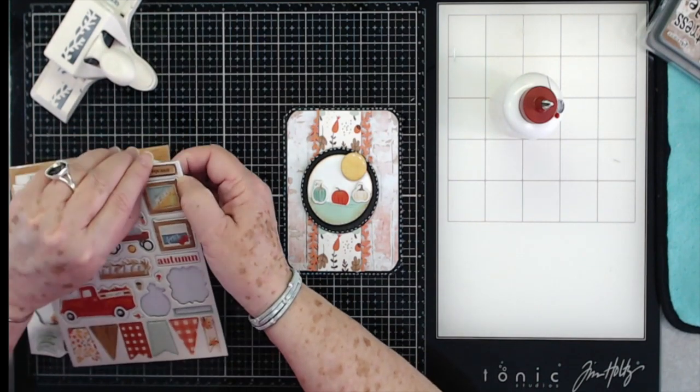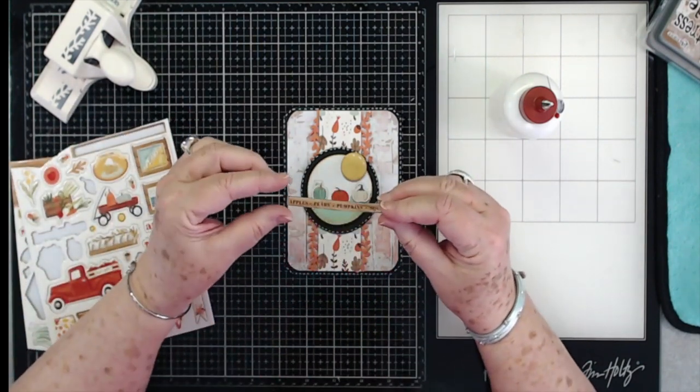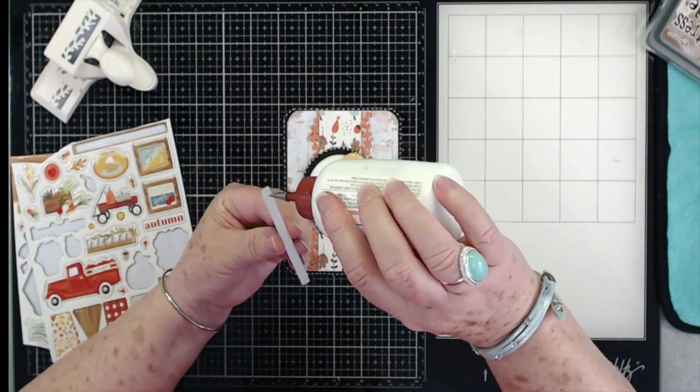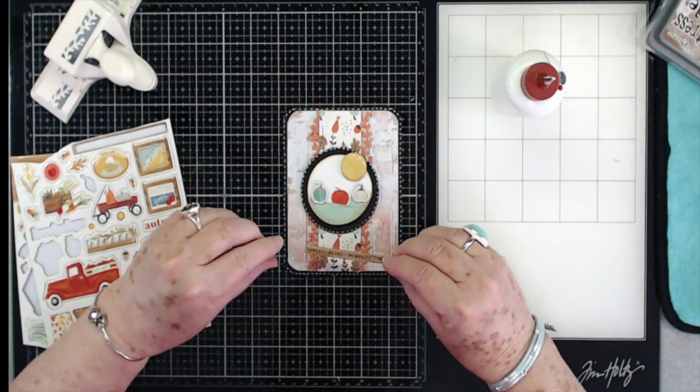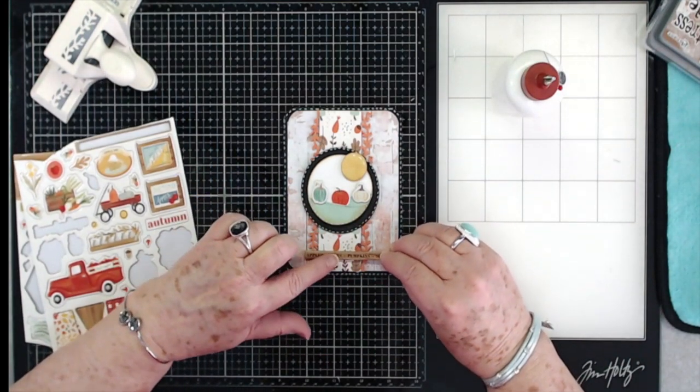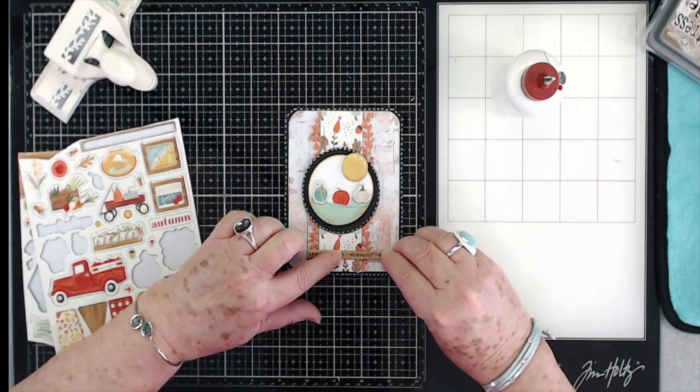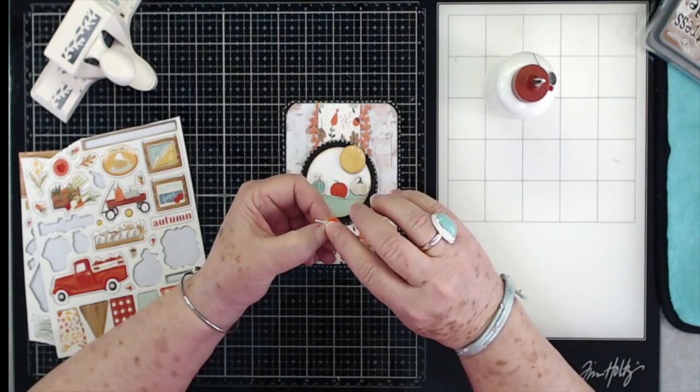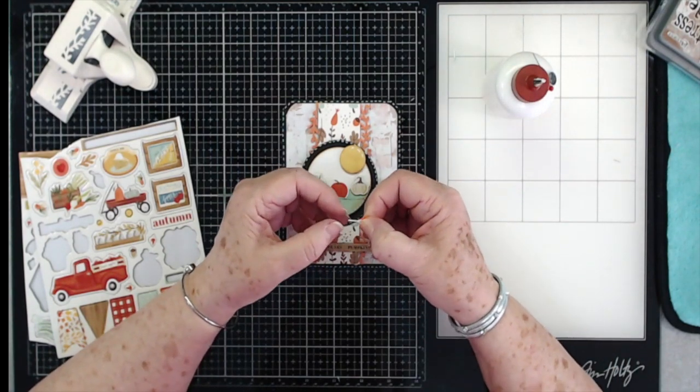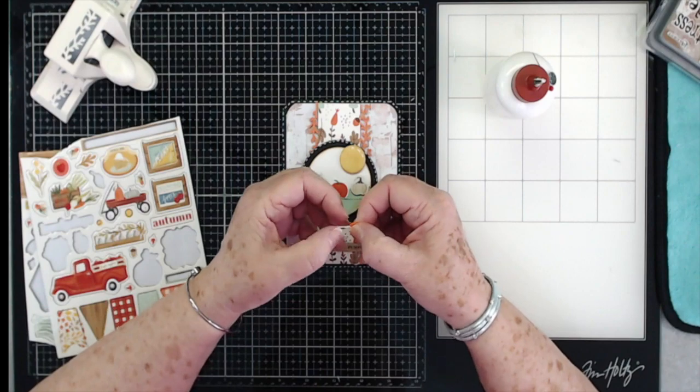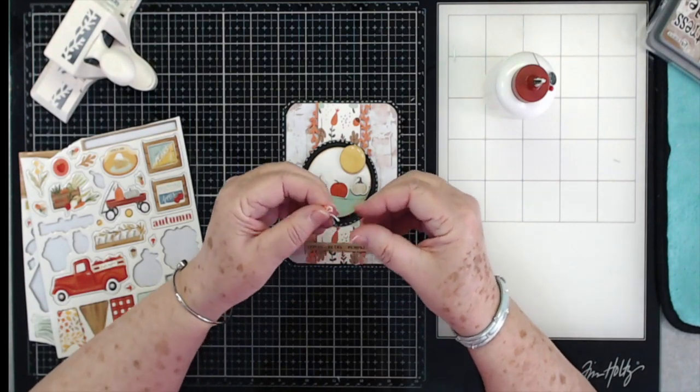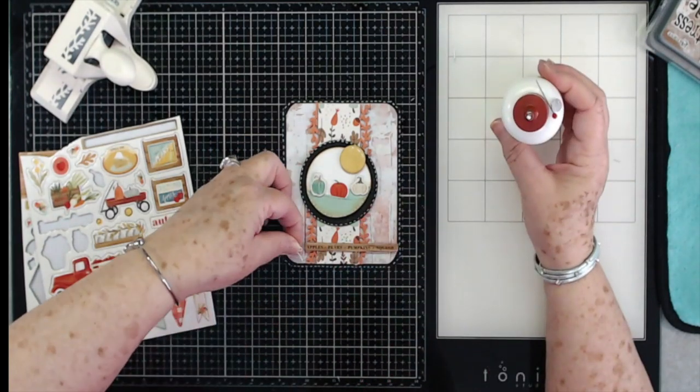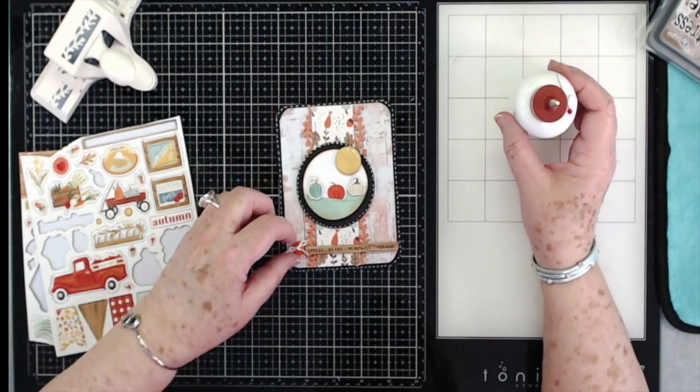And then I have this little banner and it just says apples, pears, pumpkins, and squash. We're going to put that down there at the bottom. Then I just have a little orange button that I have tied a bow on. I'm gluing that bow so that the thread doesn't come out of it. And we're just going to put that right there.